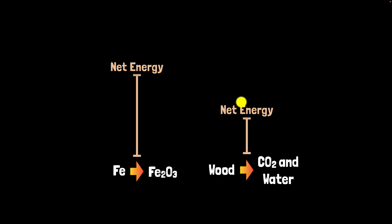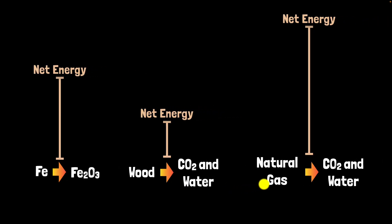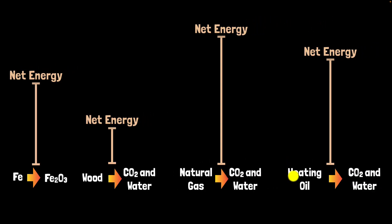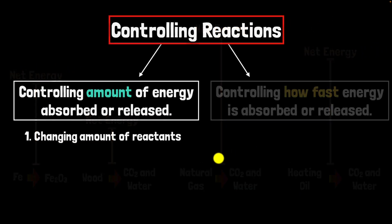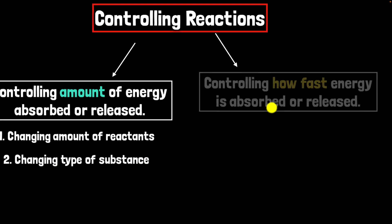On the other hand, burning natural gas releases a lot more energy due to its structure. So using different substances is another way to control how much energy is released. That gives us two methods for controlling the amount of energy: changing the amount of reactants, and changing the type of substance used.